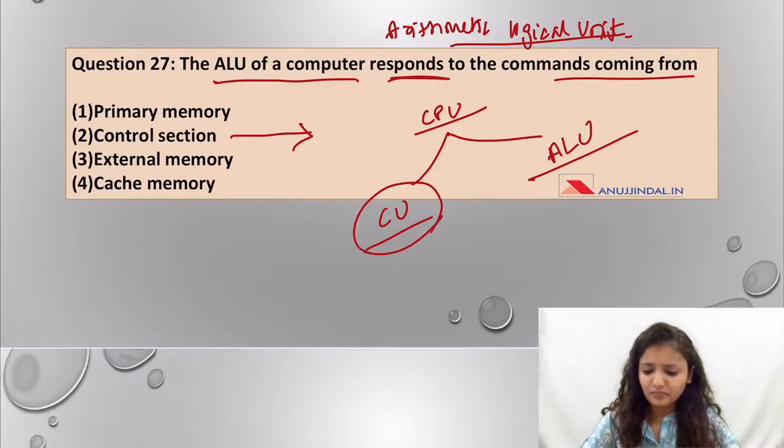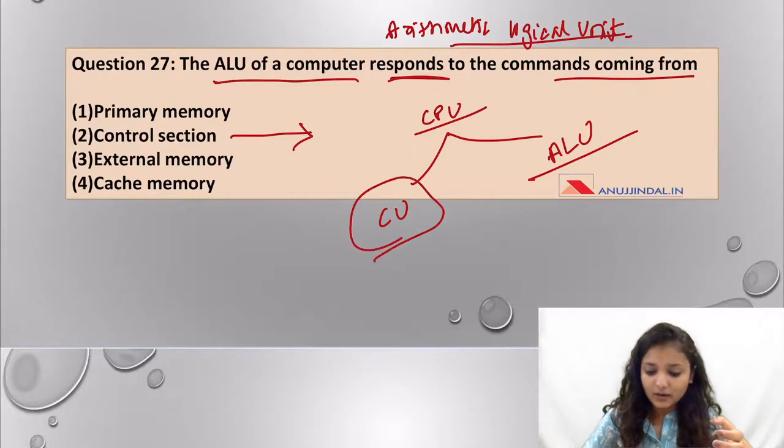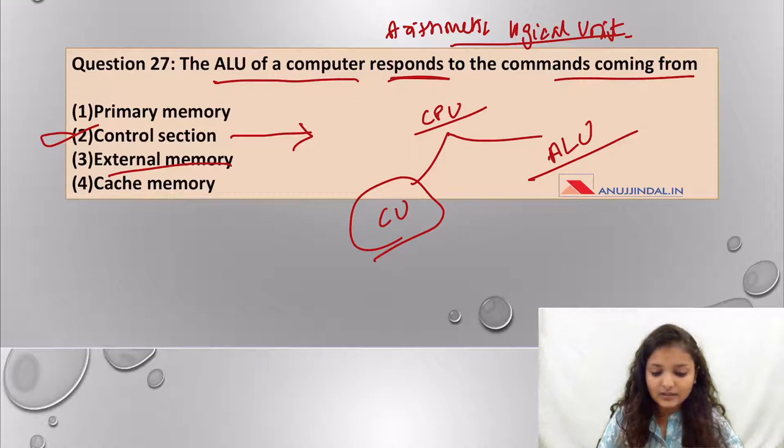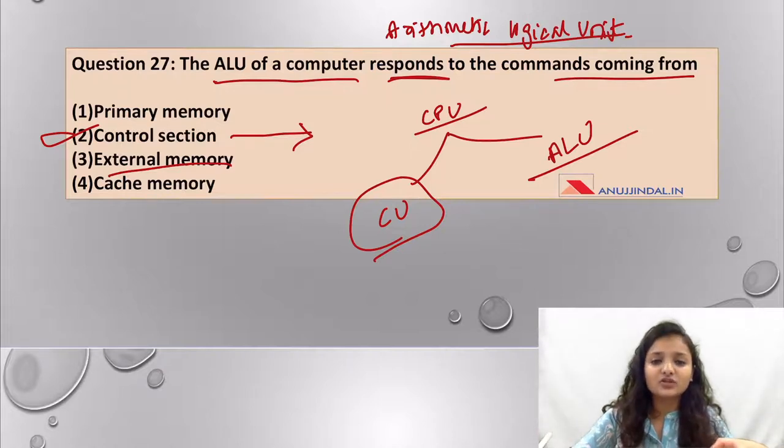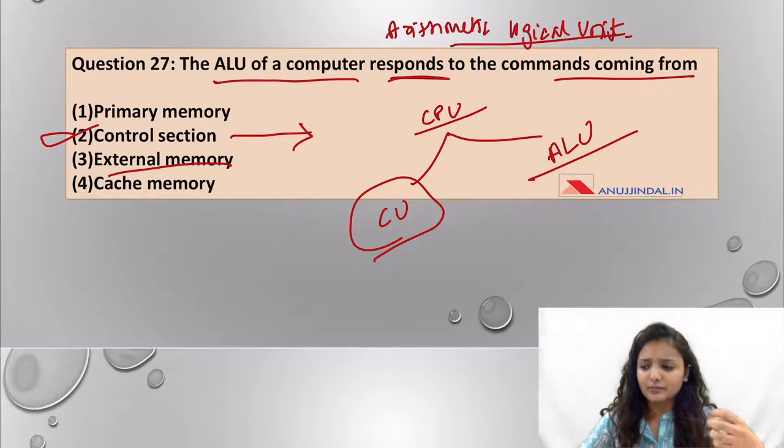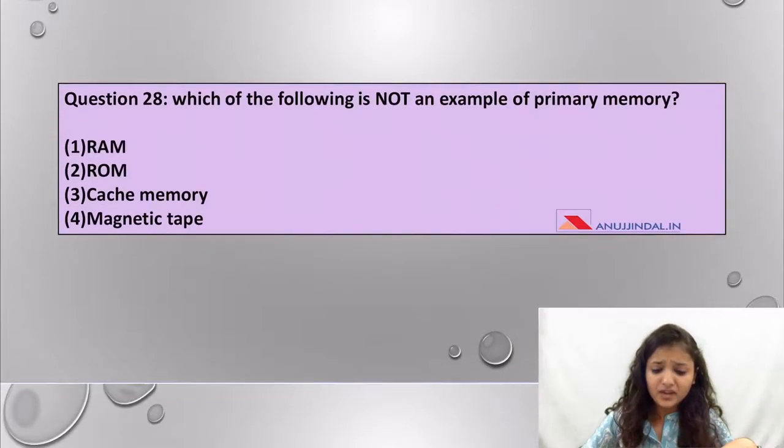Let me make an analogy. CU, which is the control unit, is like an orchestra leader. It itself doesn't perform anything but it commands the other systems of the computer to perform. The answer here will be control section. External memory is memory externally attached to the computer, examples are hard drives, magnetic tapes, tape drives. Cache memory is basically to increase the performance of the computer.